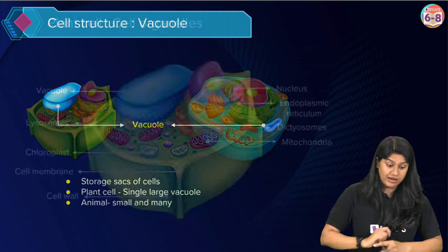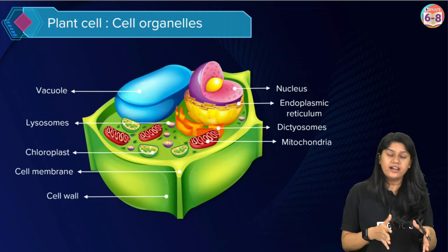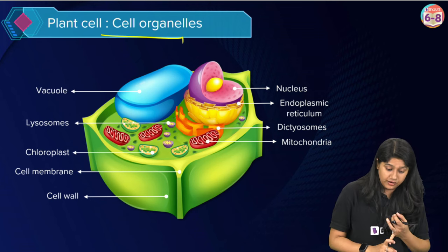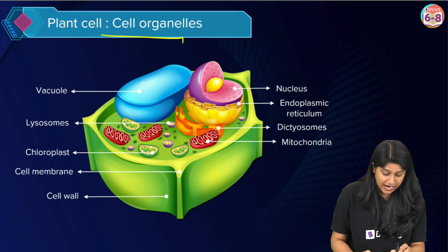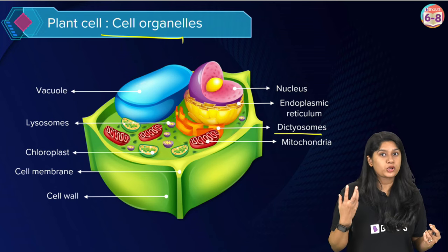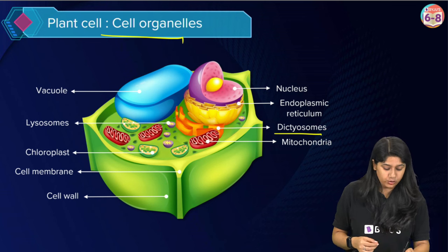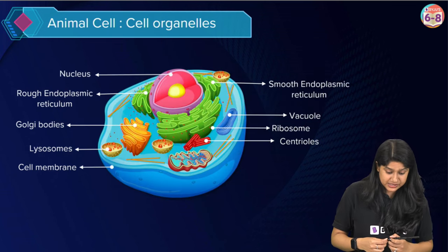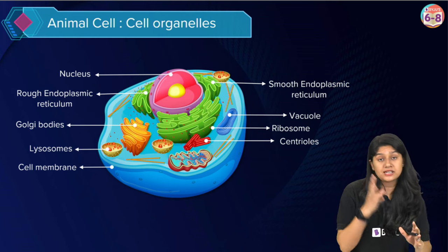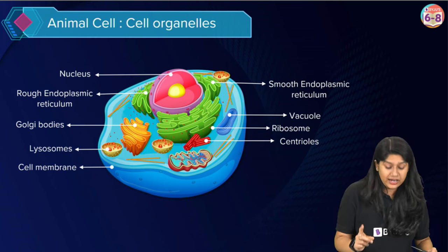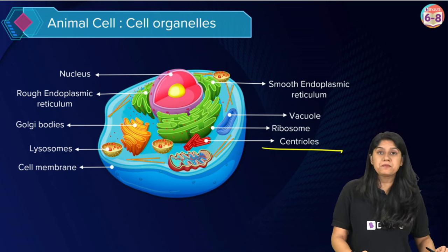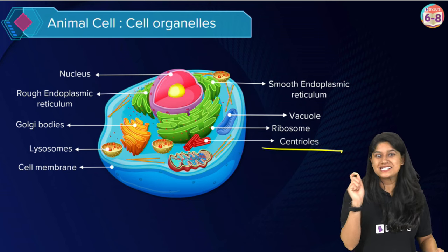In summary, plant cells have nucleus, ER, lysosomes, mitochondria, cell wall, chloroplast, cell membrane, and vacuole. Animal cells have nucleus, ER, mitochondria, cell membrane, lysosomes, and vacuole. Some organelles are present only in plant cells and some only in animal cells. Centrioles are present only in animal cells and they help in cell division.